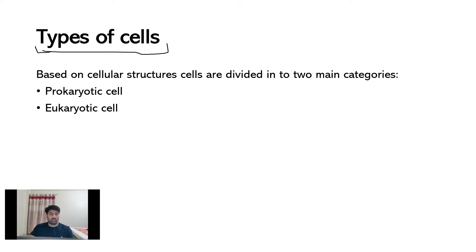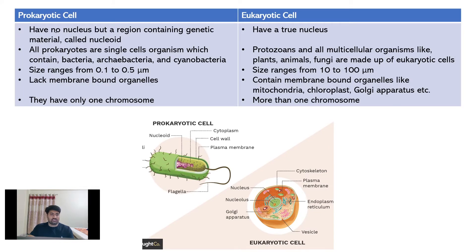Based on their structural complexity, cells are divided into two main categories, prokaryotic cells and eukaryotic cells. Prokaryotic cells have no nucleus but only contain a region containing genetic material called nucleoid. Here in this image, we can see the nucleoid where genetic material is present.